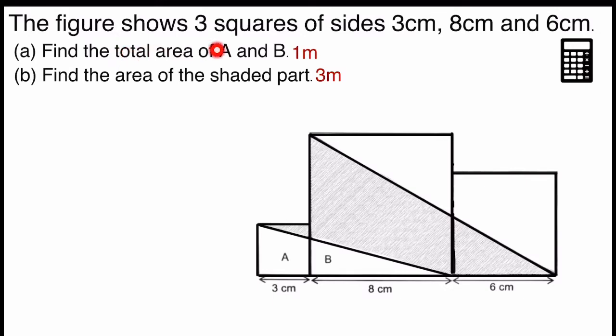First, find the total area of A and B. It's a one-mark question for that. And B, find the area of the shaded part, three marks for that. It's a paper tool question, and you can use the calculator.